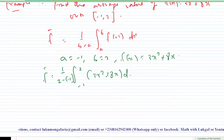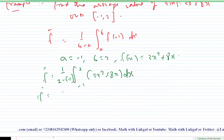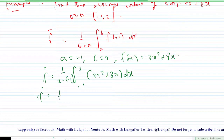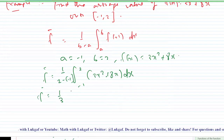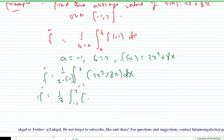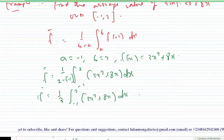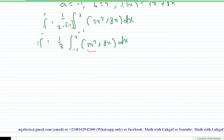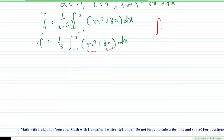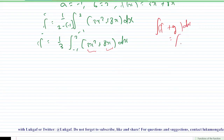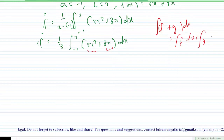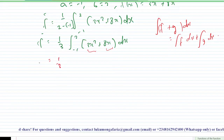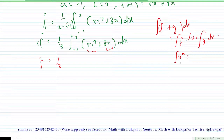Recall that multiplying minus by minus gives positive, so the denominator becomes 3, giving us one-third times the integral from −1 to 2 of (3x² + 8x) dx. We can integrate directly by applying the linearity property, which says the integral of (f + g) dx equals the integral of f dx plus the integral of g dx.